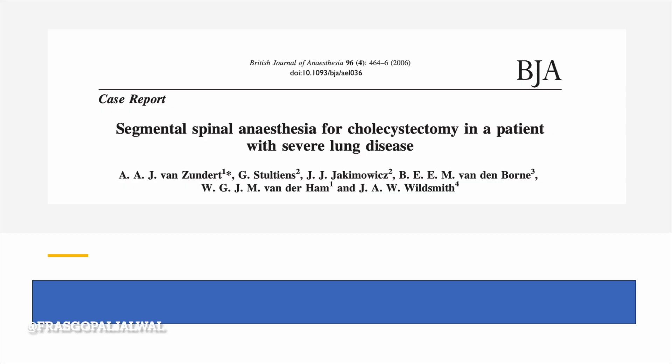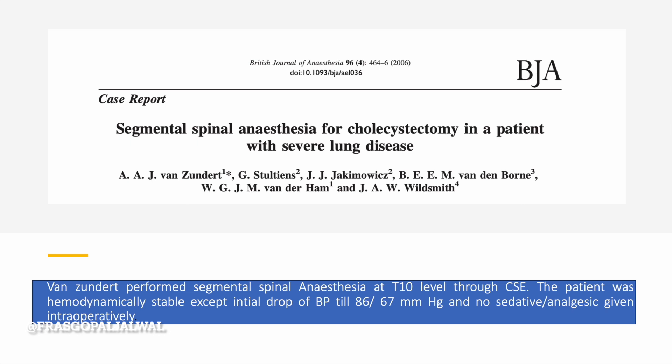Without any serious complications. Another case report was published in 2006 in the BJA with the title of Segmental Spinal Anesthesia for cholecystectomy in a patient with severe lung disease who was waiting for a lung transplant, so general anesthesia was avoided. Judd performed Segmental Spinal Anesthesia at T10 level through CSE; the patient was hemodynamically stable except for an initial drop in BP to 86/67 mmHg, with no sedative or analgesic given intraoperatively. The initial hypotension responded well to ephedrine.